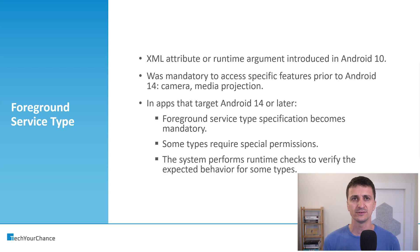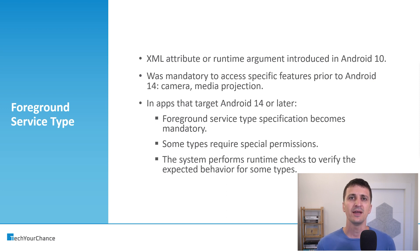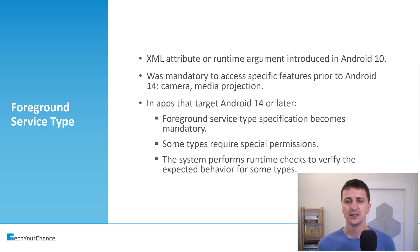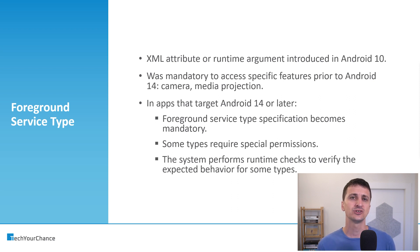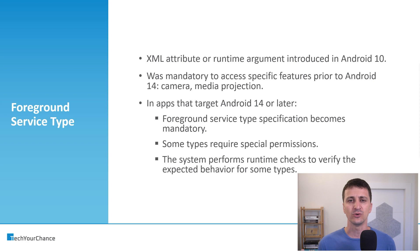For example, for a camera foreground service that accesses camera, the system will verify that this service actually uses camera at runtime. If that service tries to access location, the system will throw an exception stating that this service does not have location permission. These foreground service types were introduced to tighten and restrict the usage of foreground services, to ensure developers and companies do not abuse this feature and to make the user more aware of what's going on.